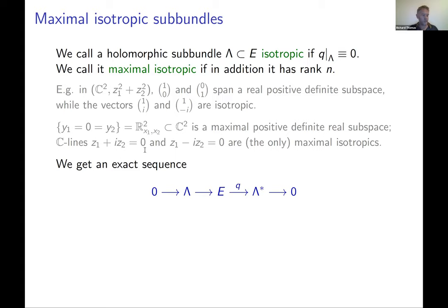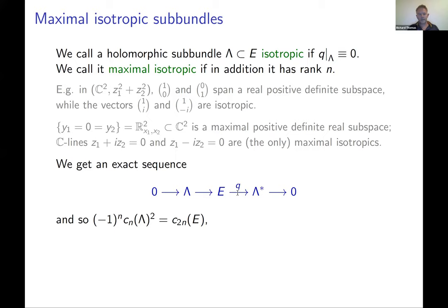When you have a maximal isotropic Λ, you get an exact sequence: 0 → Λ → E → Λ∨ → 0. Taking a vector e in E and pairing with elements of Λ defines an element of Λ∨; Λ is the kernel because Λ paired with Λ is zero, and maximality makes the map onto. The standard example: take any rank-n bundle Λ, form Λ ⊕ Λ∨, which has a natural quadratic structure with Λ maximal isotropic. Non-trivial extensions are also possible.